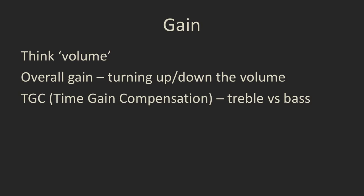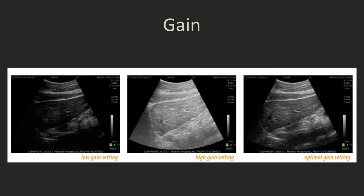Modern machine settings do a pretty good job of setting the gain appropriately, but you may need to adjust it. Think of gain as the volume or brightness of the image. There's a button that will say 'gain' or might say '2D' — you just turn it up or down to change that brightness. Time gain compensation, or TGC, is where you're altering the gain at different depths through the image — think of it as altering the treble versus the bass rather than turning up the overall volume.